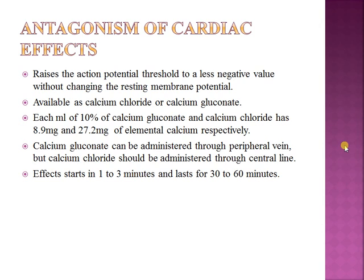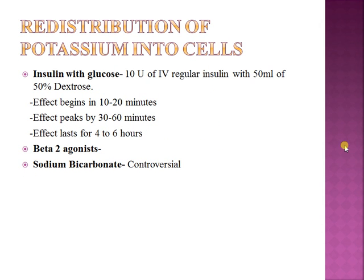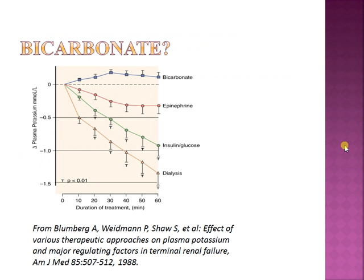For redistribution of potassium into cells: give insulin with glucose — if the patient is hyperglycemic, use insulin alone. Give 10 units of IV regular insulin with 50 mL of 50% dextrose. Effect starts in 10 to 15 minutes, peaks at 30 to 60 minutes, and lasts 4 to 6 hours; repeat every 4 hours if potassium rises again. Beta-2 agonists also shift potassium into cells and can be useful when peripheral IV access is unavailable. The role of sodium bicarbonate is controversial.